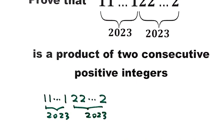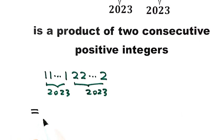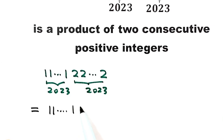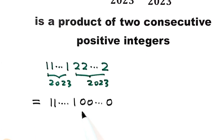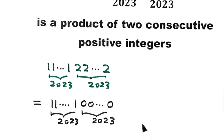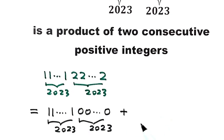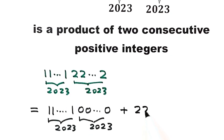So then the first step, we are going to separate this number into two parts. Plus, then we can put 1111, followed by 2023 zeros, so here 2023, and also here 2023. Then plus, so we're going to separate from here, so then here just 2023 twos.